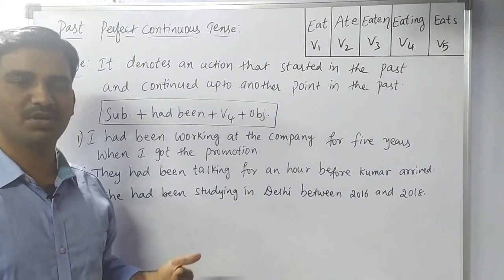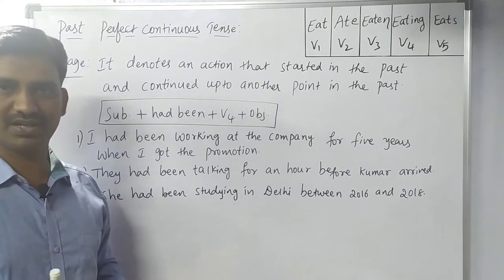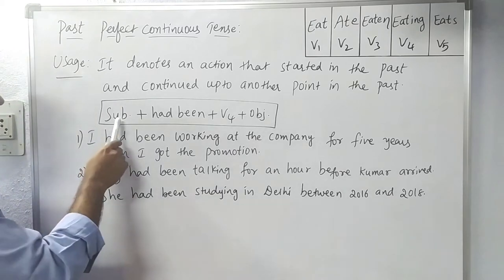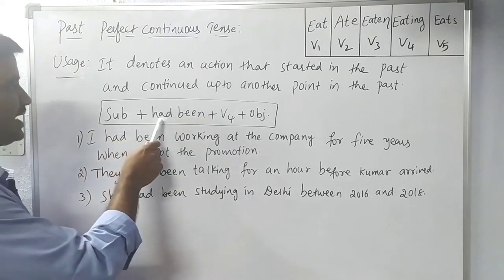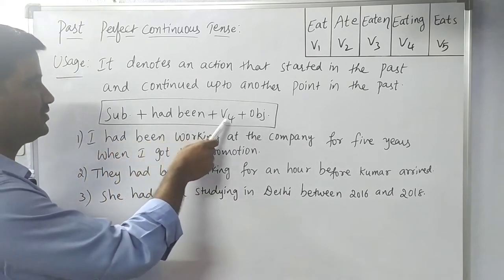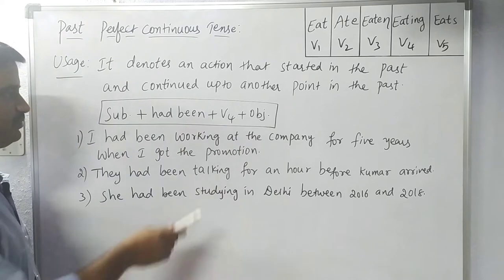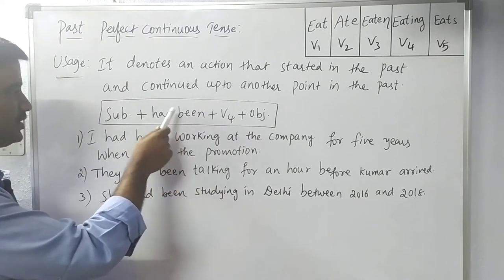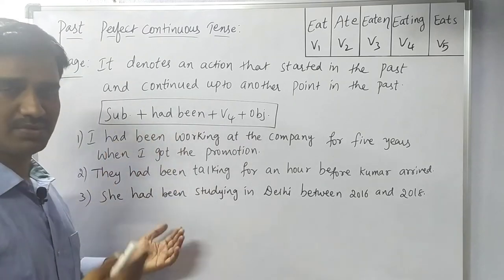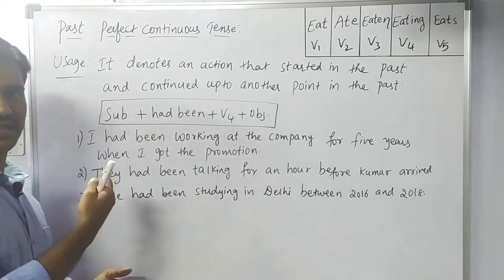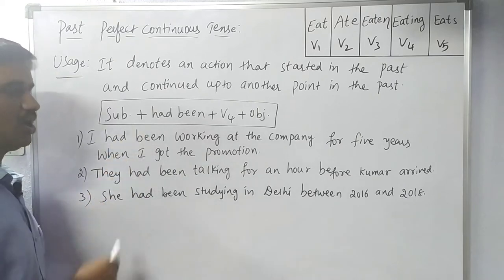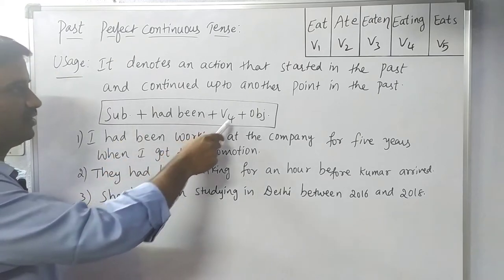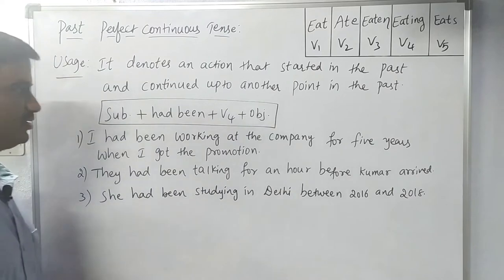So we have the structure for Past Perfect Continuous Tense: Subject + had been + V4 + object. Here, 'had been' is used with all subjects, and V4 means ing-form words.